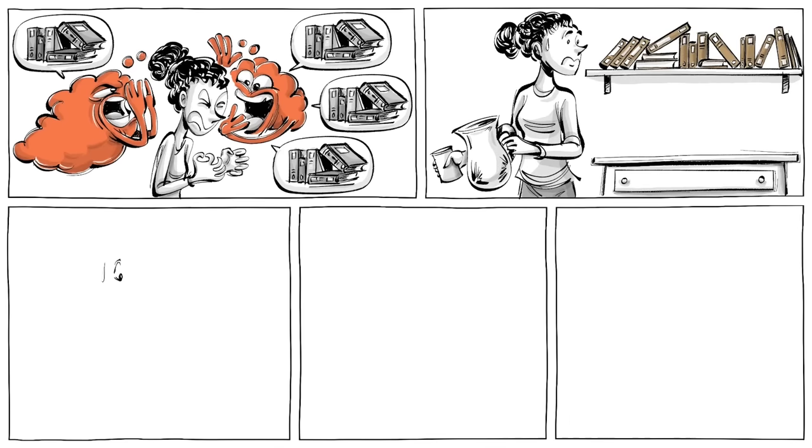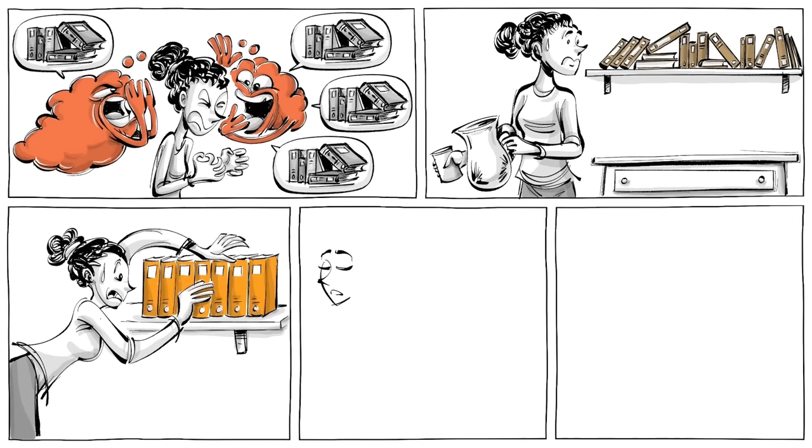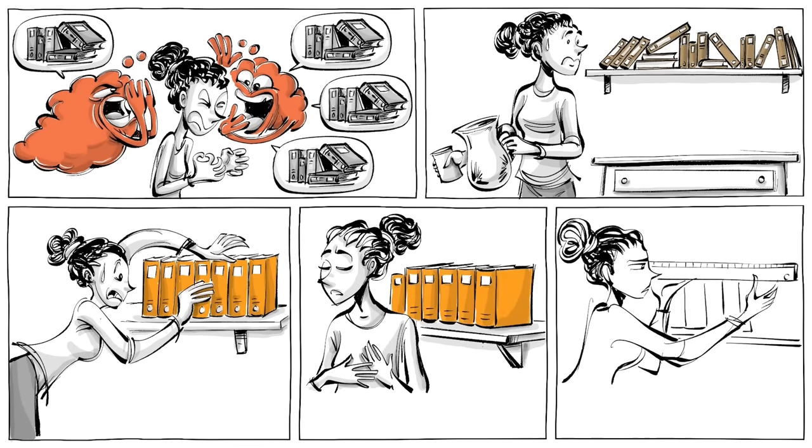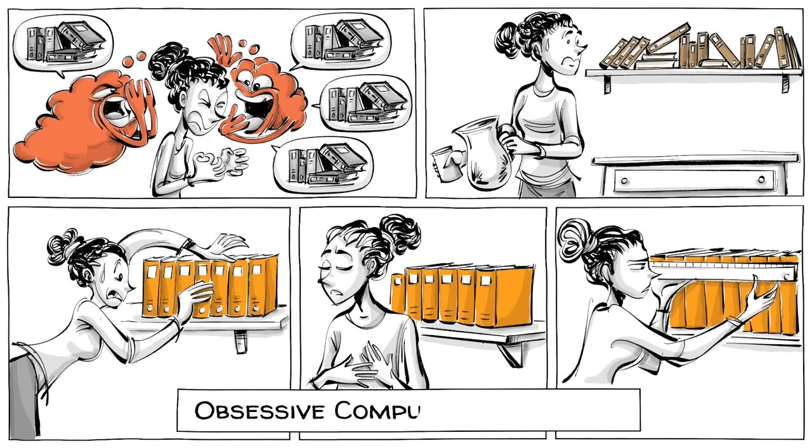OCD is a mental condition in which a person has unwanted, intrusive, and repetitive thoughts that become obsessions. These obsessions then make them do things that relieve them from these thoughts, a behavior known as a compulsion. This is why it's called obsessive compulsive disorder.